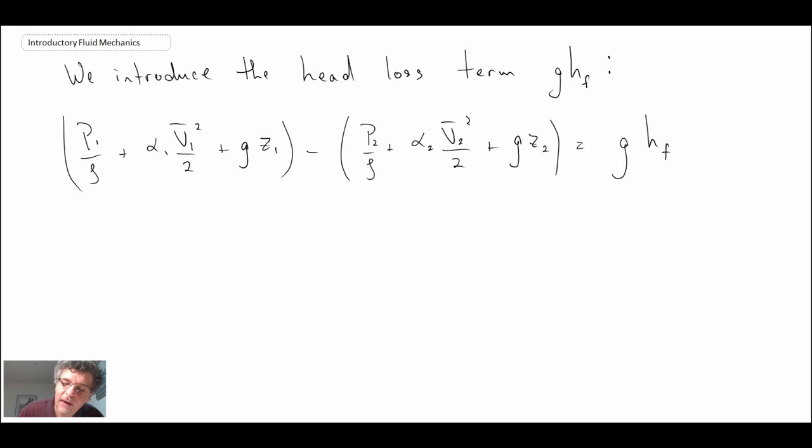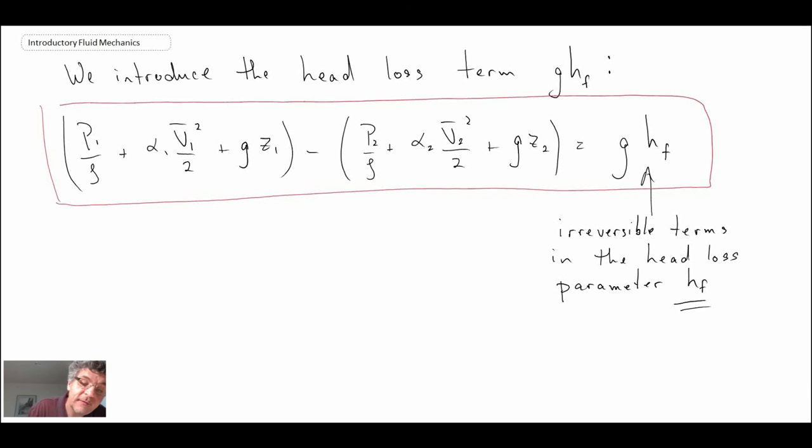So what we do is we lump those irreversible terms into this head loss, and we'll call it a head loss parameter HF. We're now going to spend a number of segments trying to figure out how to quantify that head loss term, because that's very important for pipe flow. If you can figure out what that head loss is, you can figure out your pressure drop, that sizes pumps, you can relate it to flow rate, diameters, all kinds of things. This is what we call a major head loss associated with pressure drop due to distance. That is the energy equation, and we'll continue with that into the next segment.